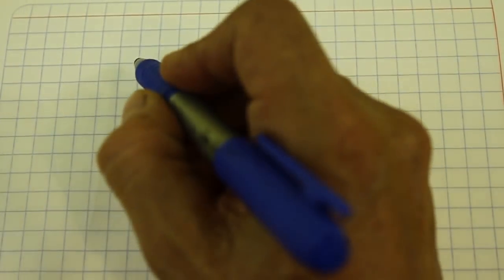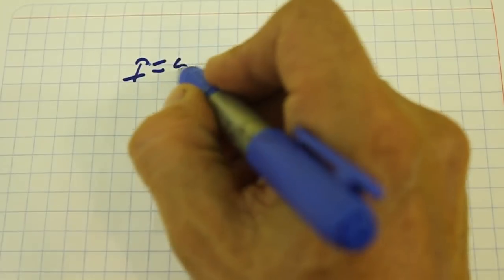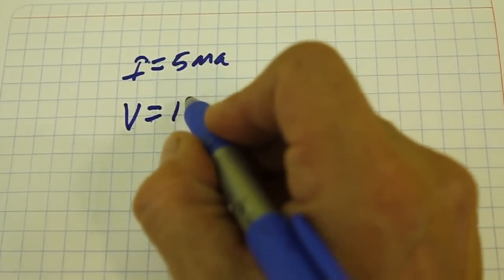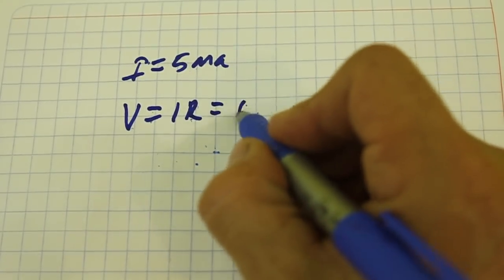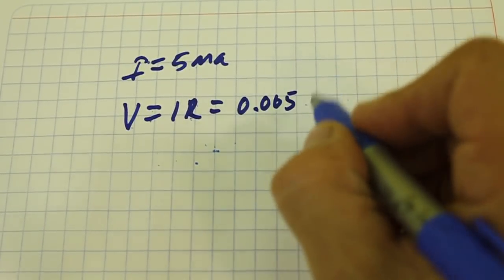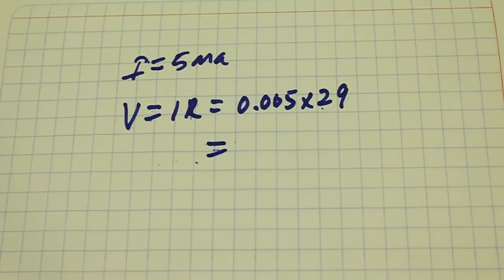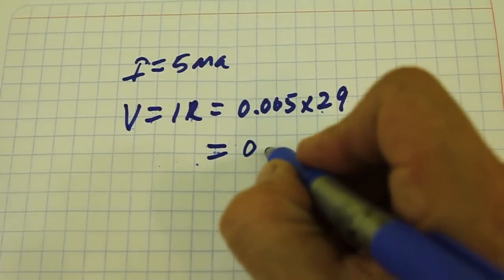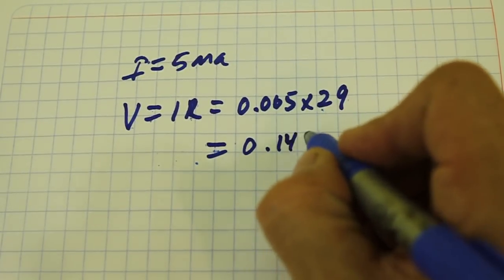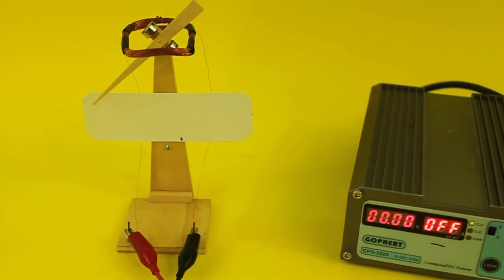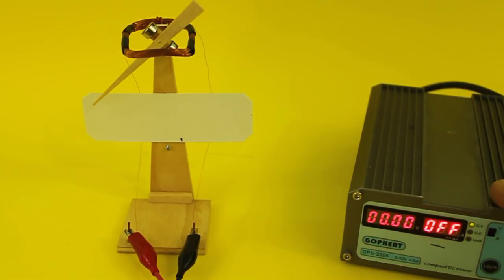Now, in order to have a current of 5 milliamps, we need to apply a voltage equal to... that is 0.145 volts. My power supply is not that precise so I will use a value of 0.15 volts.